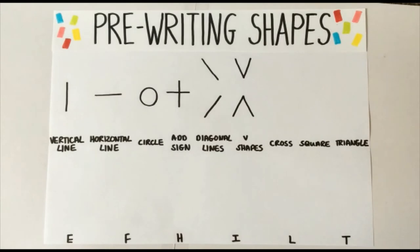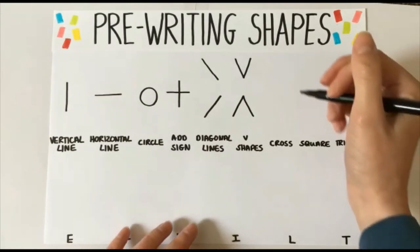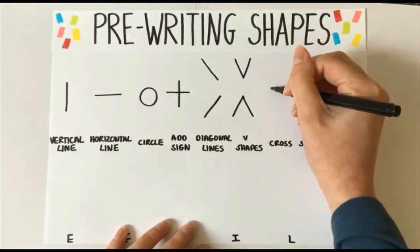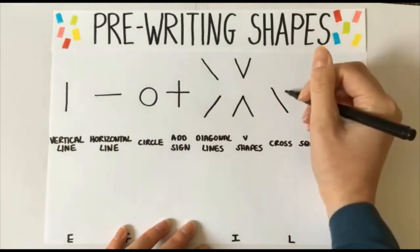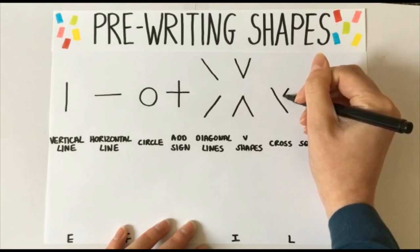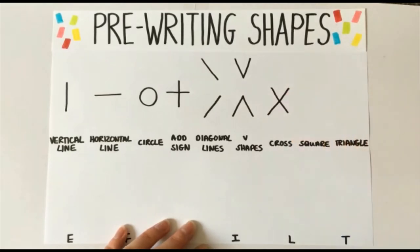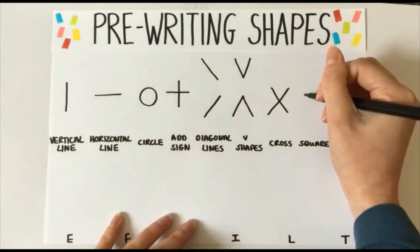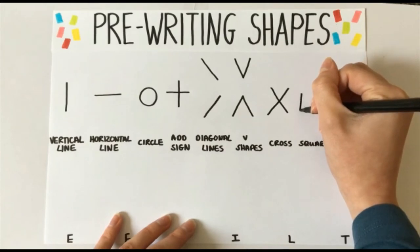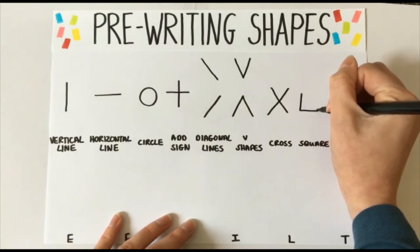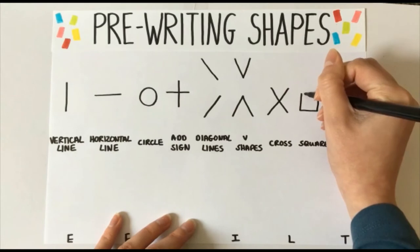Cross. Again, using our diagonal lines, we need to go from the top, down and across to the bottom. Pen off, down and across the other way. Square. We need our vertical and horizontal line for this one. So we need to start at the top, go down, across, up and across.